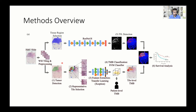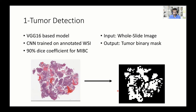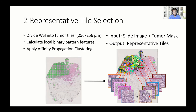Now let's go over how we detected tumor infiltrating lymphocytes and tumor mutation burden. First, we performed tumor detection using a VGG16-based convolutional neural network architecture trained on whole slide images annotated by a pathologist. The model receives a whole slide image and outputs a tumor binary mask, achieving around 90% Dice coefficient. We then select representative tiles by dividing tumor regions into non-overlapping tiles of 256 micrometers squared, calculate local binary pattern features for each tile, and apply affinity propagation clustering to select exemplars as representative tiles.